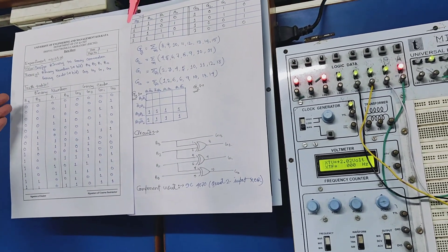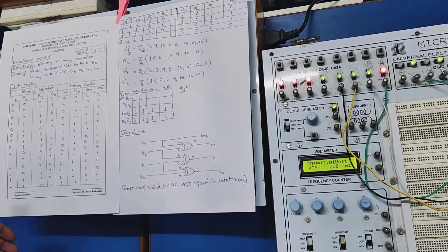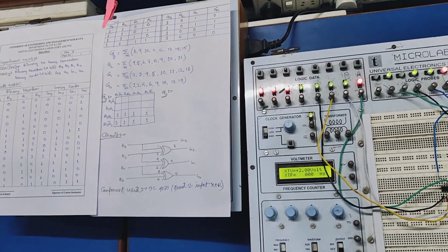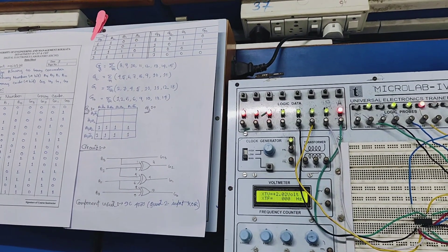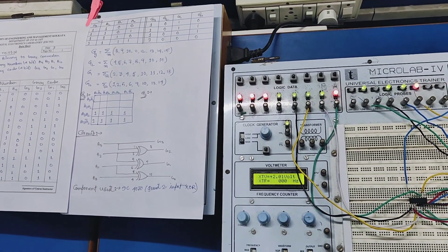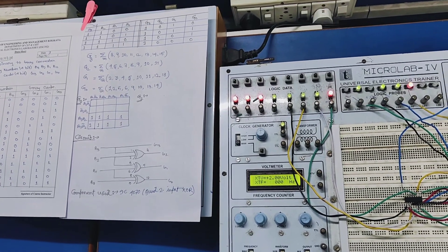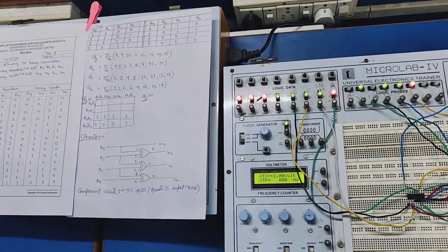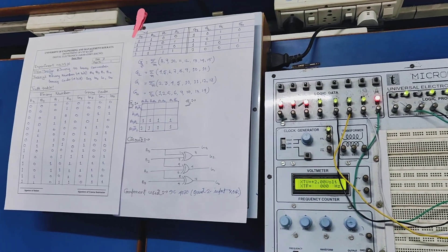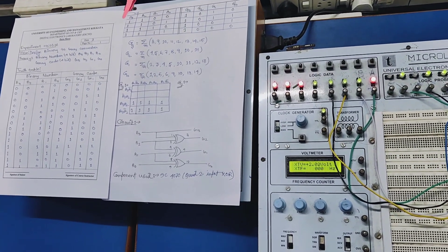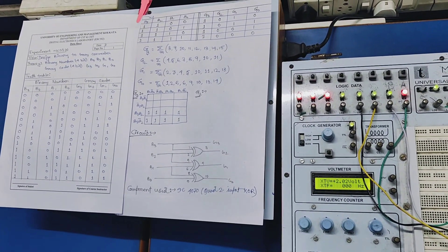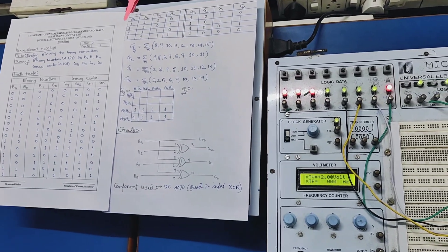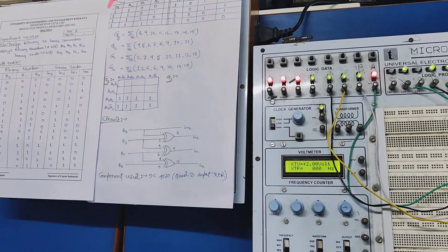You can see the binary digits and the expressions are g0 equal to b0 XOR b1, g1 equal to b2 XOR b1, g2 equal to b3 XOR b2, g3 equal to b3. From the expressions which we told before we made a circuit diagram which is this.